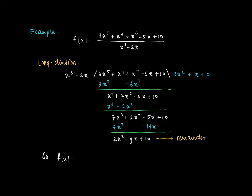So now we may write f(x) as this polynomial of degree 3, which is x to the power 3 plus x plus 7, plus the remainder term still divided by x to the power 3 minus 2x. So the remainder is 2x squared plus 9x plus 10, divided by x to the power 3 minus 2x.